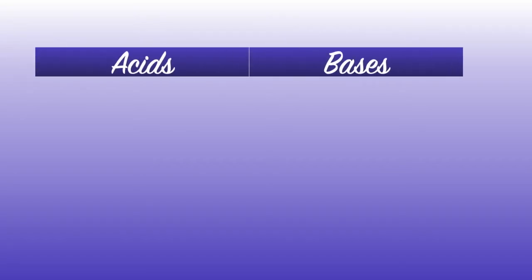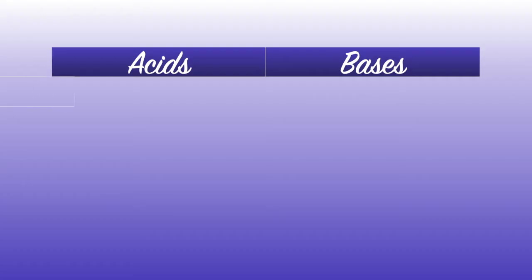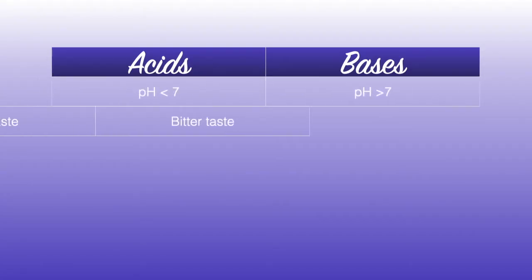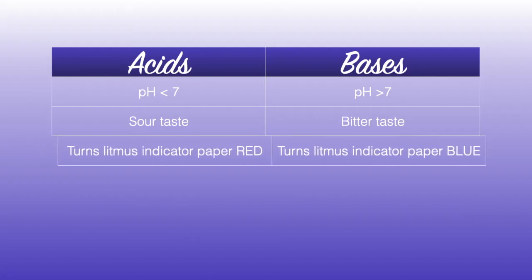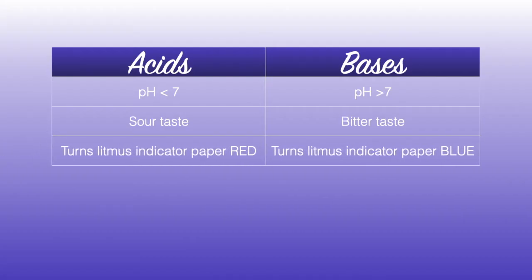Let's take a look at some characteristics of acids and bases. Acids have a pH less than 7, whereas bases have a pH greater than 7. Acids like lemons, vinegar, and coffee have a sour taste, whereas bases have a bitter taste.